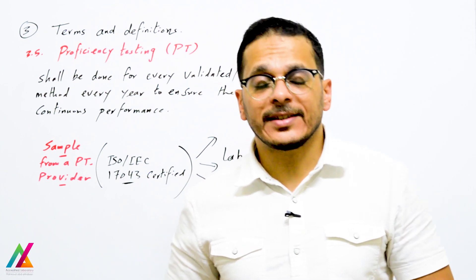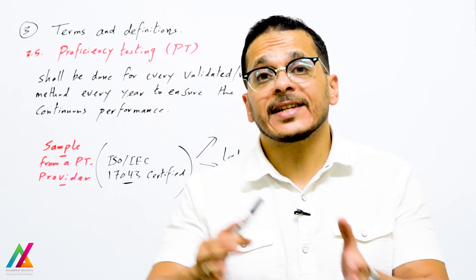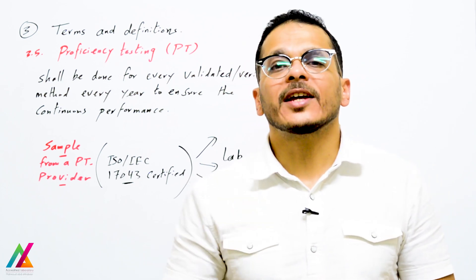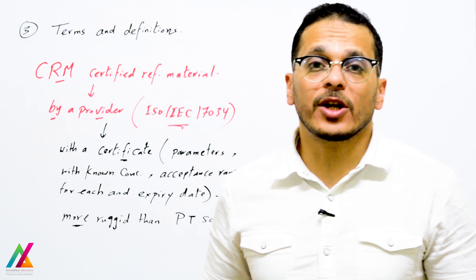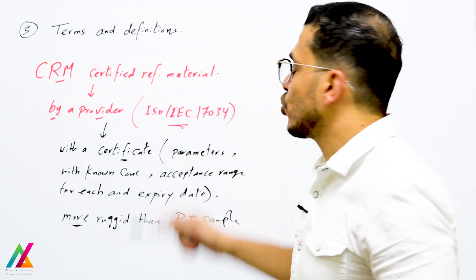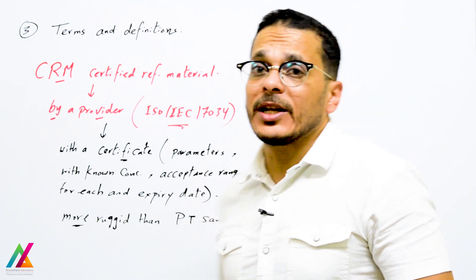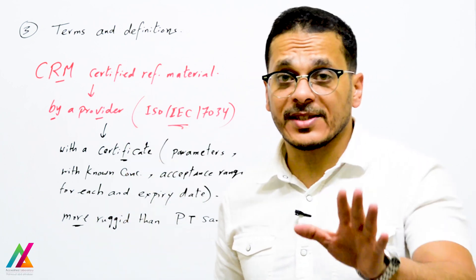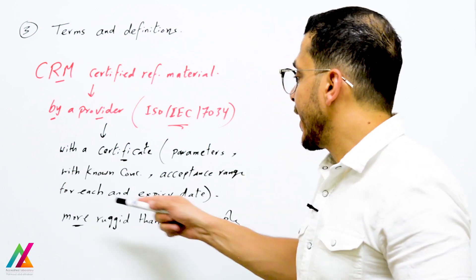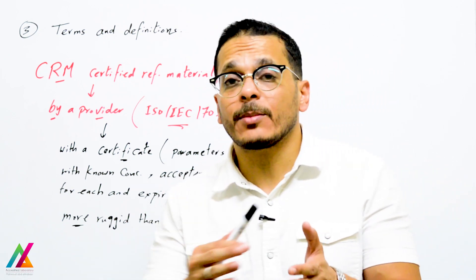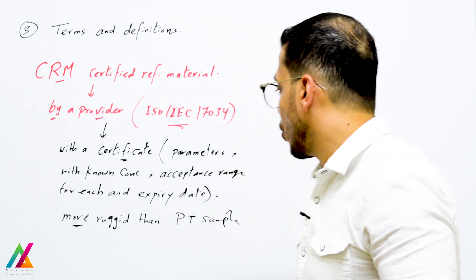If a PT sample is not available for your method or target analyte in a specific matrix, you use an inter-lab comparison sample or blind sample. Another option is a CRM (Certified Reference Material), which shall be provided by a CRM provider meeting the requirements of ISO IEC 17034. The CRM certificate includes found parameters, concentrations for each parameter, acceptance ranges, and an expiration date. CRMs are more stable than PT samples and can last up to two years.